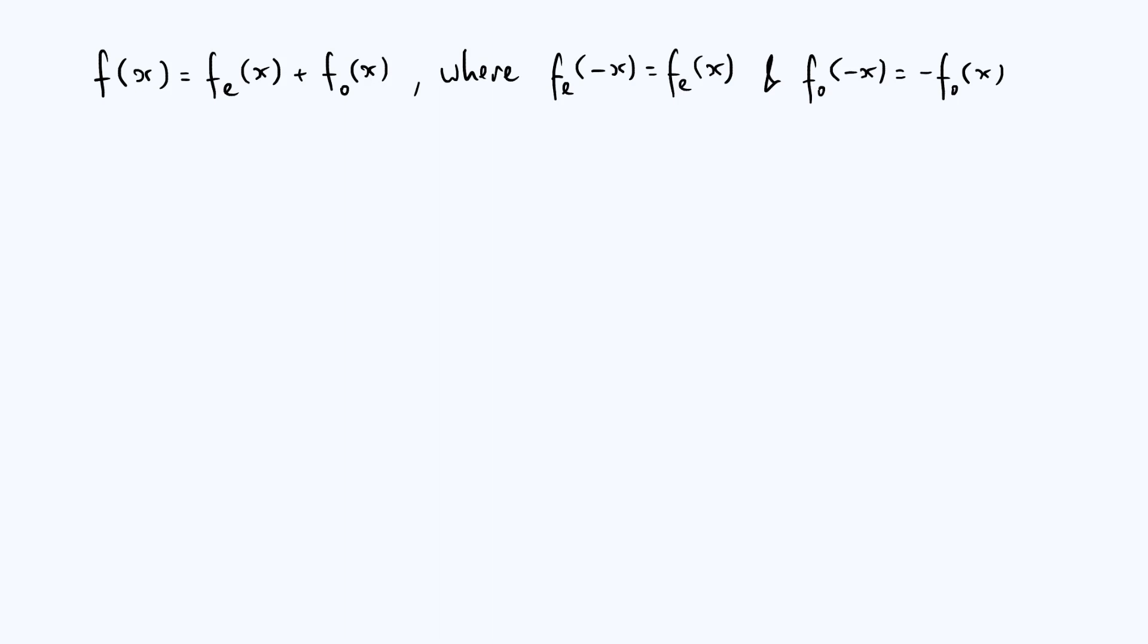So how do we know what to actually choose for fe of x and fo of x? Well, we basically need to form a pair of simultaneous equations. We've got one equation here, but if we're trying to find what fe and fo are in terms of the function f of x, we need a second equation. And that can come from the symmetry properties that we're aiming to have.